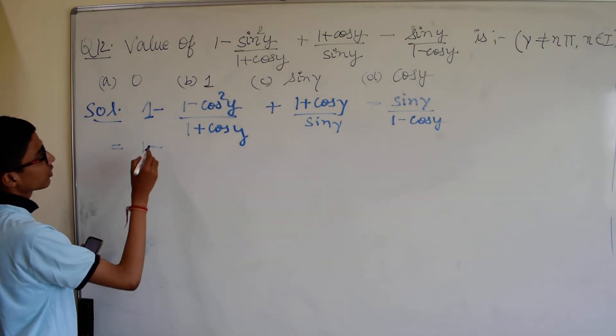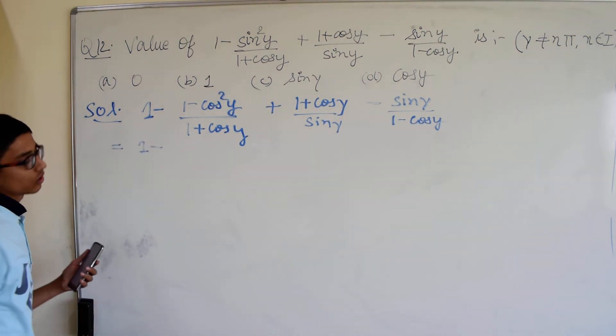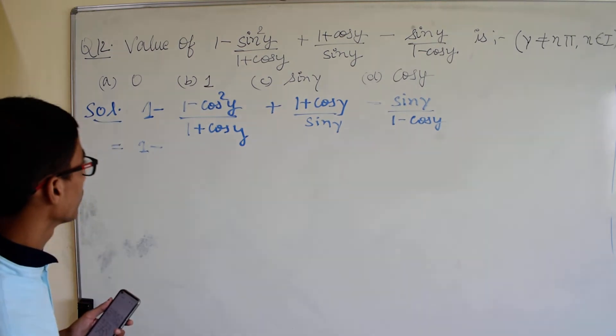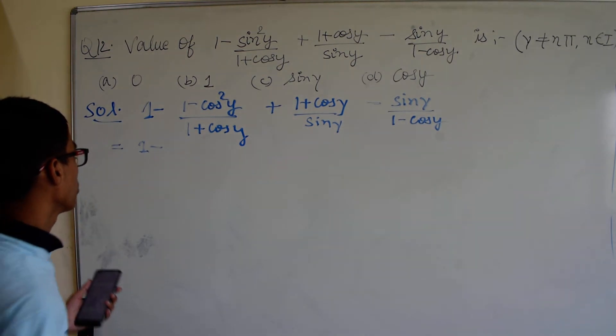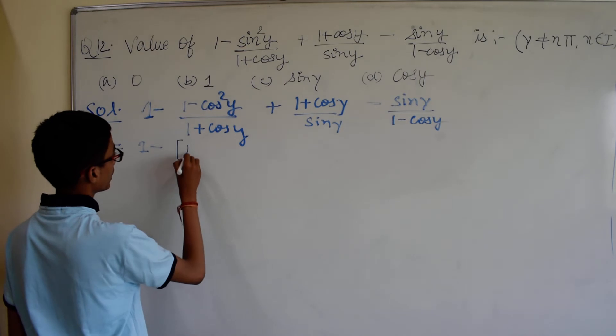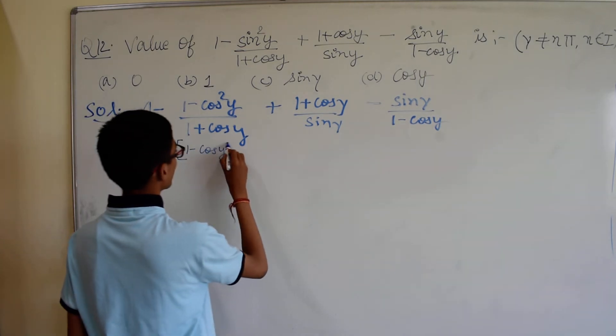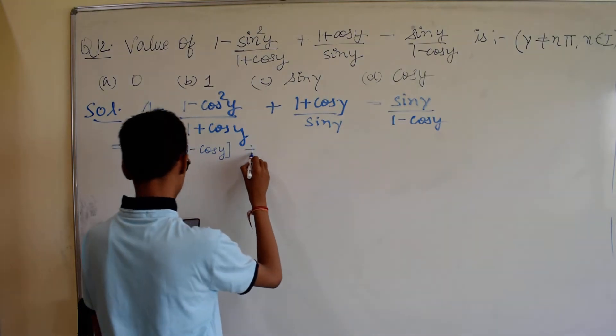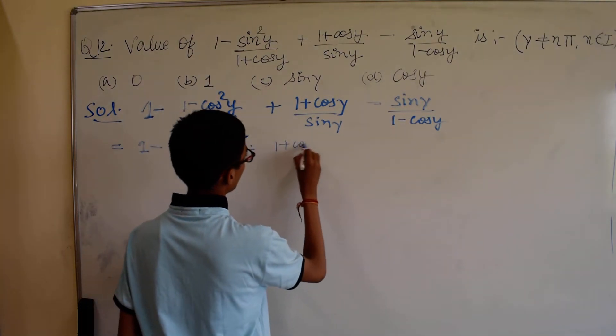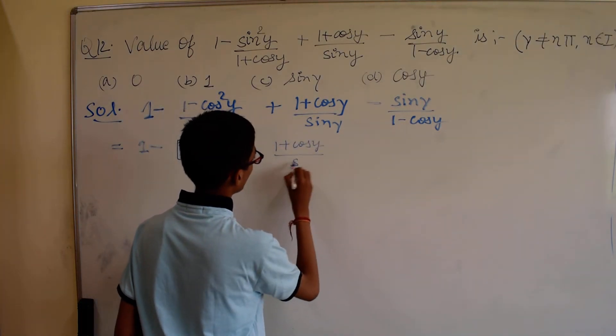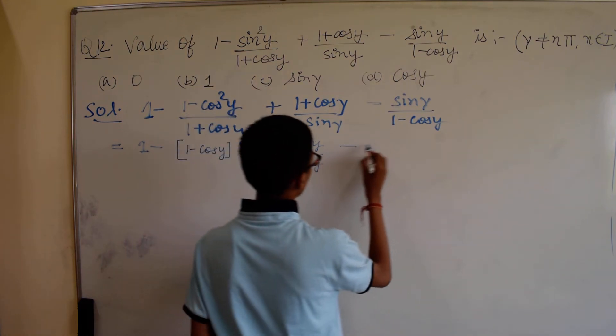So 1 minus cos squared y divided by 1 plus cos y into 1 minus cos y over. And 1 plus cos y can be the error. It will be 1 minus cos y plus 1 plus cos y, sin y minus sin y.